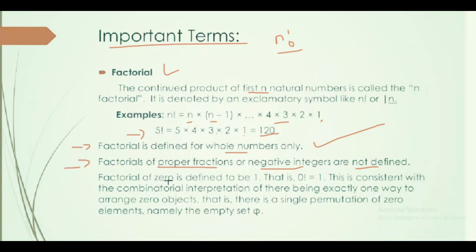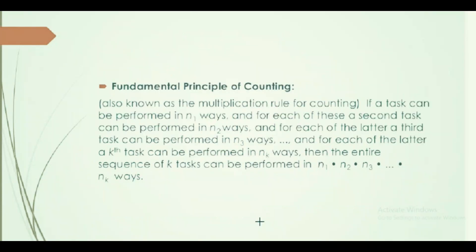Factorial of 0 is defined to be 1. By definition, factorial of 0 equals 1. This is consistent with the combinatorial interpretation of there being exactly one way to arrange 0 objects. There is a single permutation of 0 elements, namely the empty set. So 0 permutation gives 0 factorial equals 1.